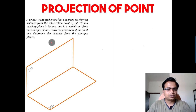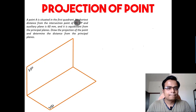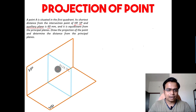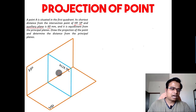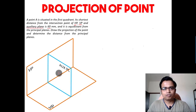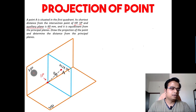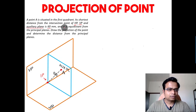Let's have the first quadrant. The shortest distance from the intersection point of HP, VP, and the auxiliary plane is 60 millimeters. So let me have an auxiliary plane, and somewhere here we will have point A, whose shortest distance from this very intersection point — the intersection of VP, HP, and this auxiliary plane — has been given.